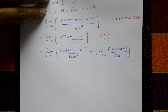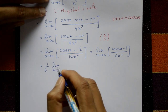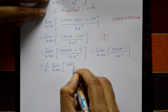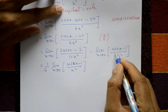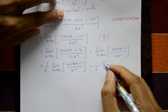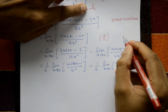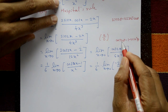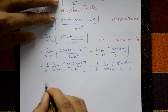Take 1/6 outside. Now limit x tends to 0 of (cos 2x minus 1) / x². Using the formula cos 2θ = 1 minus 2·sin²θ, we get cos 2x minus 1 = minus 2·sin²x. So the expression becomes minus 2·sin²x / x², and 2 and 6 cancel to give minus 1/3.